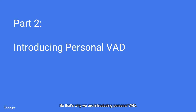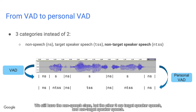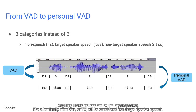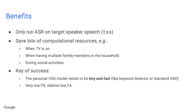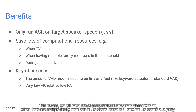That's why we are introducing Personal VAD. Personal VAD is similar to standard VAD — it is a frame-level classifier — but the difference is that it has three categories instead of two. We still have the non-speech class, but the other two are target speaker speech and non-target speaker speech. Anything not spoken by the target speaker, like other family members or the TV, will be considered non-target speaker speech. The benefits are that we only run ASR on target speaker speech, saving computational resources when the TV is on, when there are multiple family members, or when the user is at a party.